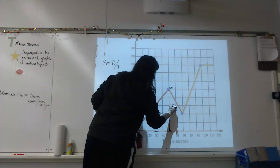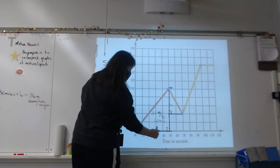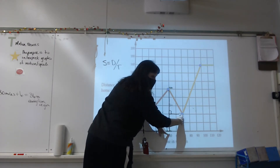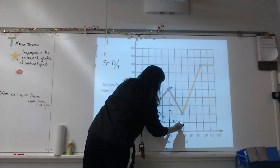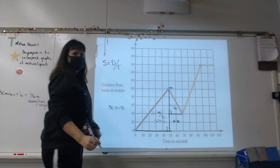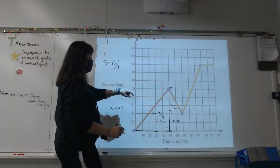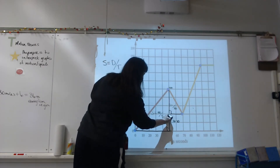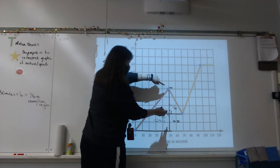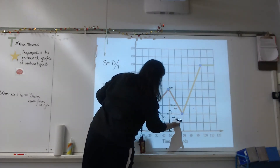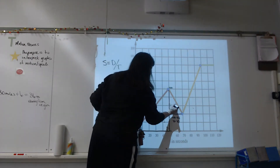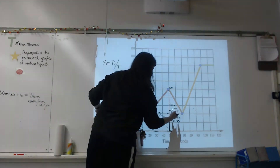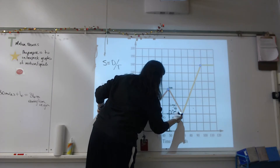Speed equals distance over time. My time here is 50, and my time here is 70 — so 70 minus 50 gives 20 seconds. My starting position is 100 meters and I go to 40 meters, so 100 minus 40 is 60 meters traveled. Speed equals 60 divided by 20 — this is where we said he was going 3 meters per second.